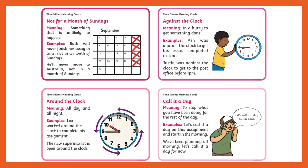To start with, as usual, we're going to look at idioms. We've got: 'not for a month of Sundays', 'against the clock', 'around the clock', and 'call it a day'. Take a moment to read what each idiom means and how you might use it in your everyday life.